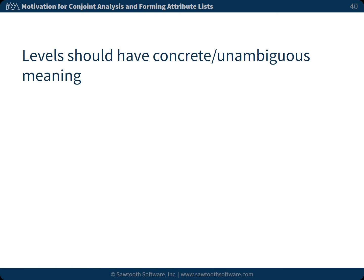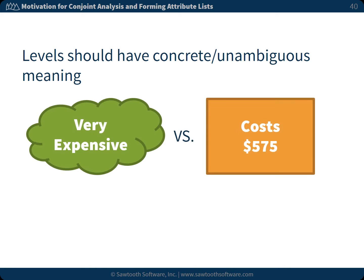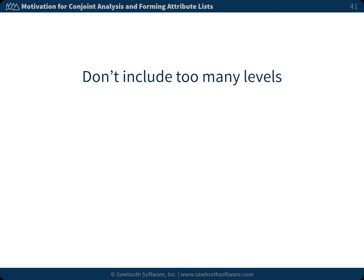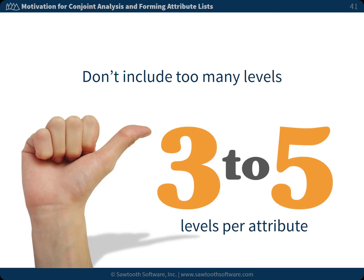Levels should have concrete and unambiguous meaning. Notice the difference between 'very expensive' versus 'costs $575,' or 'weight is 5 to 7 kilos' versus 'weight is 6 kilos.' One description leaves meaning up to individual interpretation, while the other does not. When possible, don't include too many levels for any one attribute — the typical rule of thumb is about 3 to 5 levels per attribute. The temptation is to include many levels of price so we can estimate people's preferences for each, but you spread your precious observations across more parameters to be estimated, resulting in noisier or less precise measurements. The better approach is usually to interpolate between fewer, more precisely measured levels for prices not asked about.